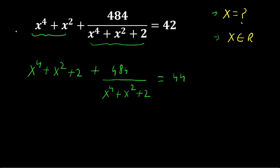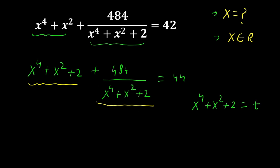Look carefully — this expression in the numerator and this expression in the denominator are the same. So we apply substitution: let x⁴ + x² + 2 equal t. Then the expression becomes t + 484/t, which equals 44.